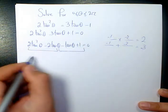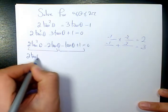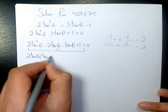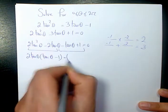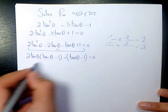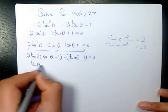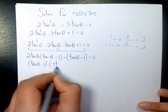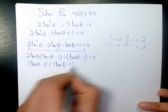Then I need to factor: 2 tan θ (tan θ - 1) - (tan θ - 1) = 0. Then I need to factor tan θ - 1. Here I have 2 tan θ - 1 = 0.